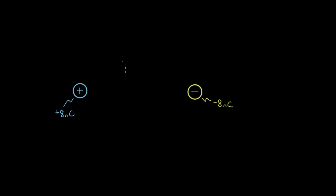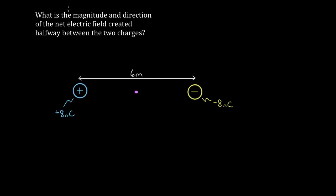Solving electric field problems gets significantly harder when there are multiple charges. Theoretically it shouldn't, but people have a lot more problems when multiple charges are involved. So let's say the question is: what's the magnitude and direction of the net electric field — the total electric field — created halfway between two charges?